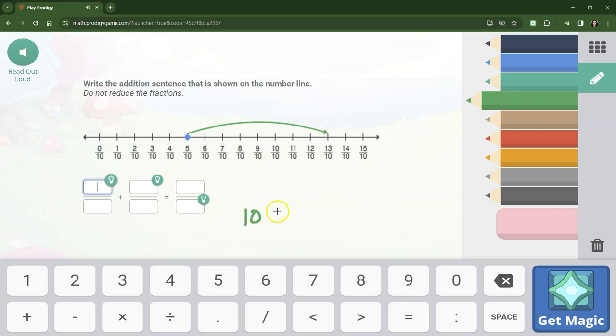Notice how all of our denominators are 10. So we're going to be able to just set up a super easy problem. And we're adding. We start at 5 tenths. And then we count how many we jump. 1, 2, 3, 4, 5, 6, 7, 8.